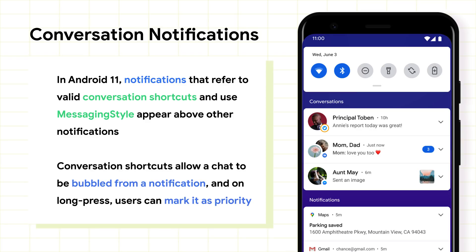So what are all the awesome things you can do with conversation shortcuts? Aside from being pinnable on the launcher and prioritized in the sharing menu, we're making it easier to see updates from conversations in the notifications pane in Android 11. Apps which push messaging style notifications that refer to valid conversation shortcuts will appear in a dedicated section above other notifications. Conversation notifications make it easier to see a sender's avatar, name, and message. These notifications will also have enhanced features. Users can selectively bubble or pop out a conversation so that they can quickly access it without switching apps. Users can also long press on a conversation to set it as priority. Priority conversations appear at the top of the conversation section, and the sender's avatar appears on your always-on display, lock screen, and status bar when you get an update.